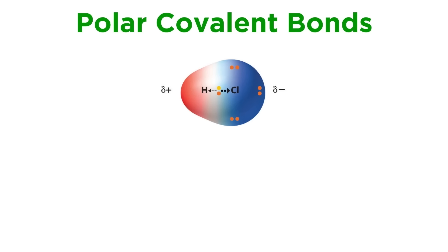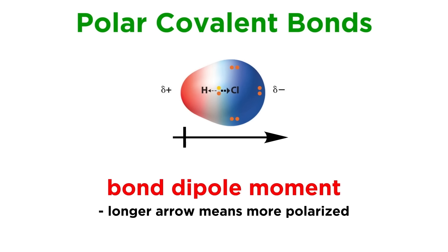As we said, if atoms of sufficiently different electronegativities form a covalent bond, it will be polar. That bond will have a bond dipole moment, and we can represent that dipole moment with a vector, which is basically an arrow that shows both direction and magnitude, such that a longer arrow means a greater dipole, or more polarized bond.